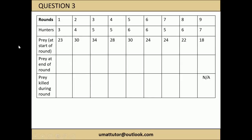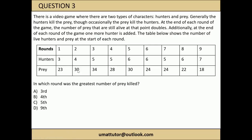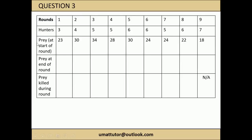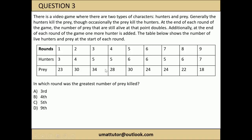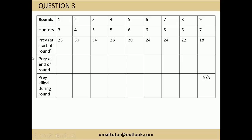I would break it down round by round and sketch up a table with: prey at the start of the round (from the given table), prey at the end of the round, and prey killed during the round (the difference between those two). To work out prey at the end of each round, since the survivors double to make the next round's starting number, we just halve the next round's starting number. So for round 1, halve the round 2 starting number to get prey at end of round 1.